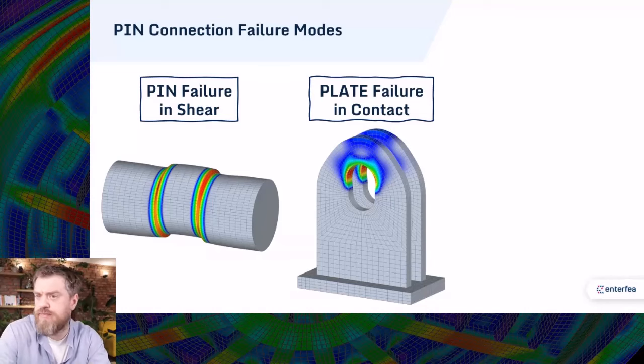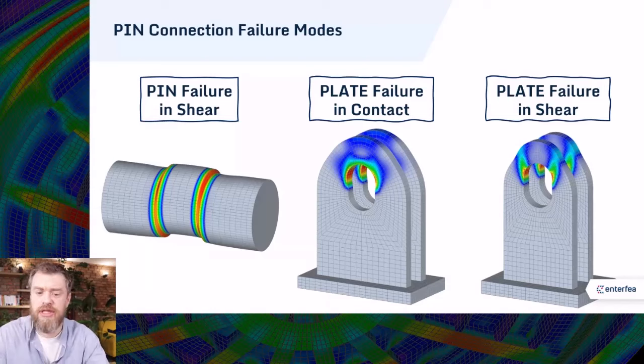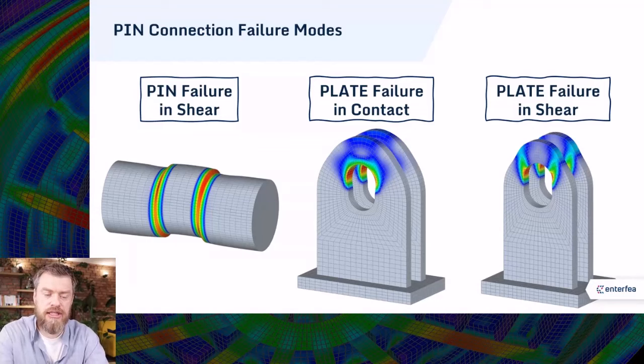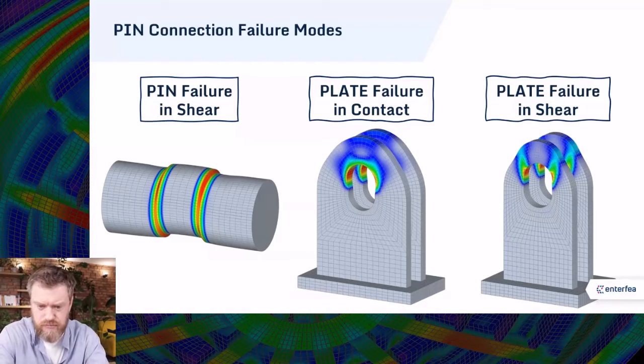A bit less obvious failure would be plate in shear. If you would have not enough steel around the pin connection, instead of failing into contact, you could actually rip a piece of the plate away from the plate. And this is, of course, a failure as well. So let's analyze those cases one by one.